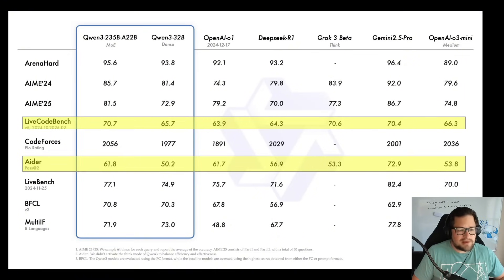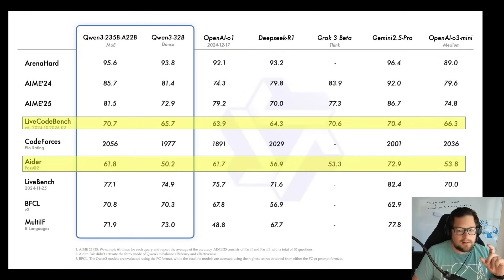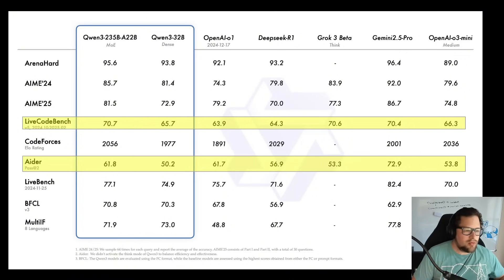Here are some benchmarks they claim. They've got Livebench at 70.7 for Qwen 3-235B versus Gemini 2.5 Pro at 70.4. I'd say the other number is probably more in line, but even that seems high to me after testing — 61.8 compared to 72.9. The CodeForce's ELO rating is claiming the highest rating, but you've got to take that with a grain of salt. I think it's probably too early to base it off that 2056 rating.